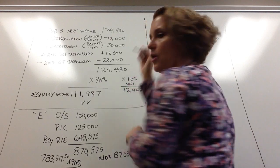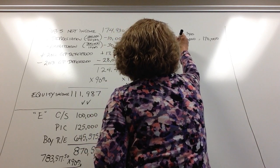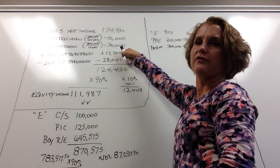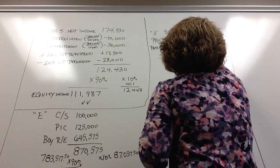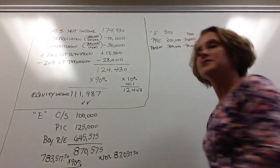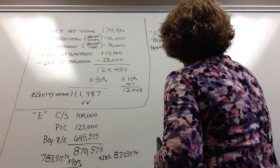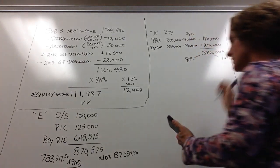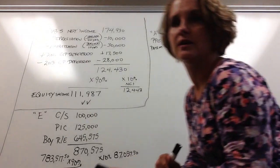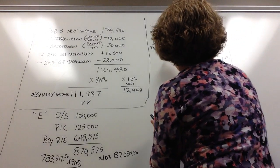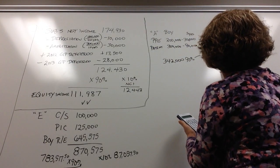The patent started at $300,000; three years at $30,000 equals $90,000, so it goes down to $210,000. But this too is split — these assets are only 90% owned by the parent. So $380,000 × 0.9 = $342,000 goes to the equity investment, and $38,000 goes to the NCI.